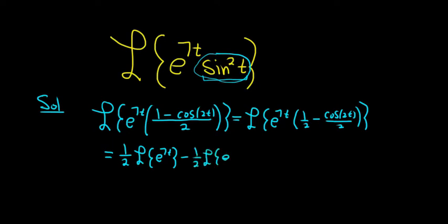Then here we have an e to the 7t, it's an e, cosine of 2t.